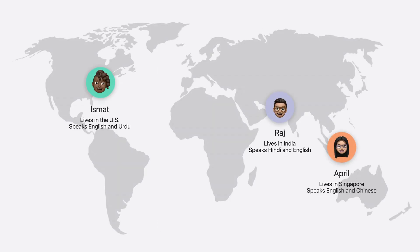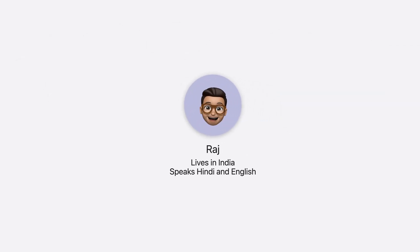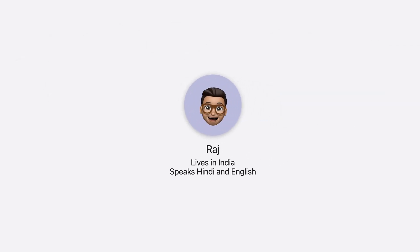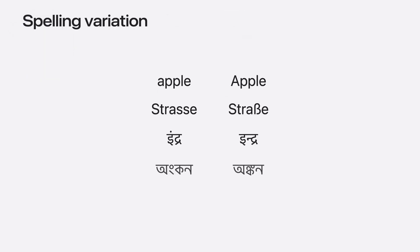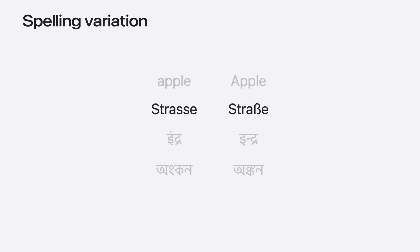Now, over to some examples from Raj to show us how we can build a great search experience. Raj lives in India and speaks Hindi and English. When he searches in Hindi, sometimes he can't find what he's looking for. Let's see why this happens and how we can fix it. Each language has rules for what are considered completely different spellings and what are related spellings.